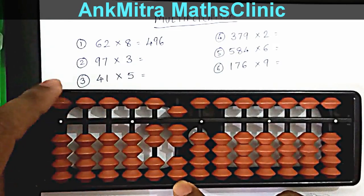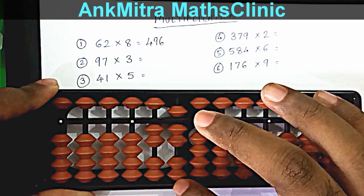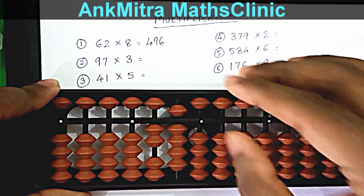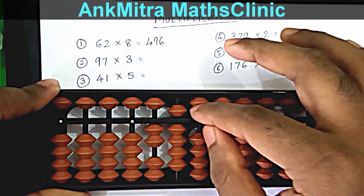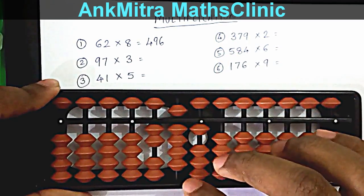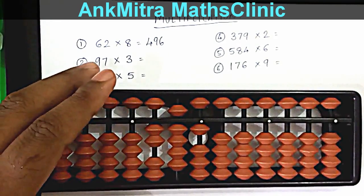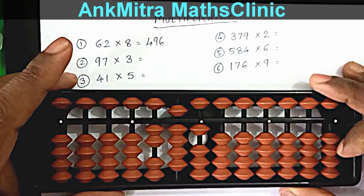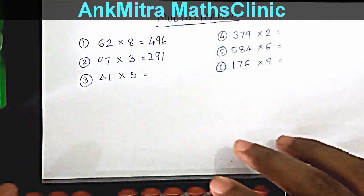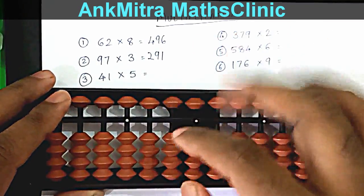The next answer number will be taken from the tens place: 7 times 3 is 21. We add 21 here — we don't need to use the formula at all because by chance we have the beads available. So 2 and 1 gives us the answer of 291. 97 multiplied by 3 is 291.